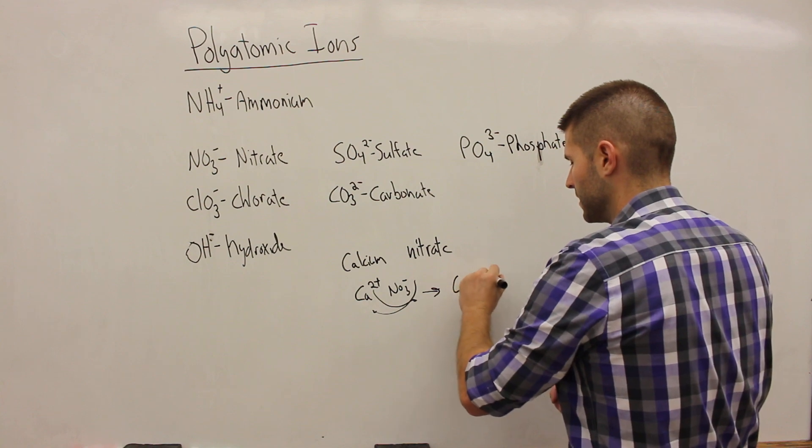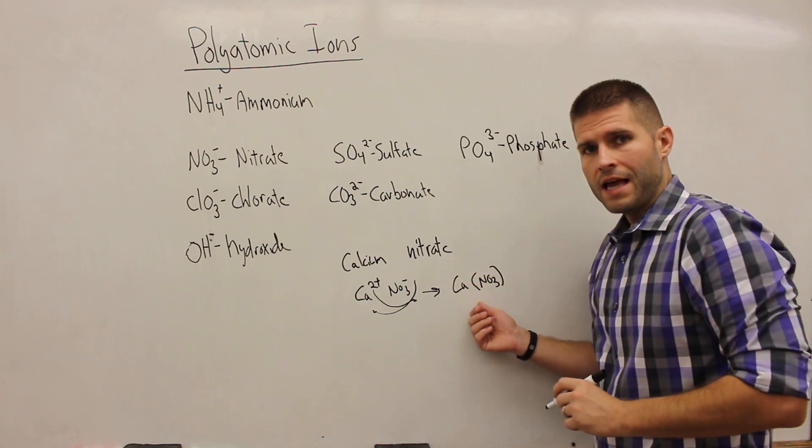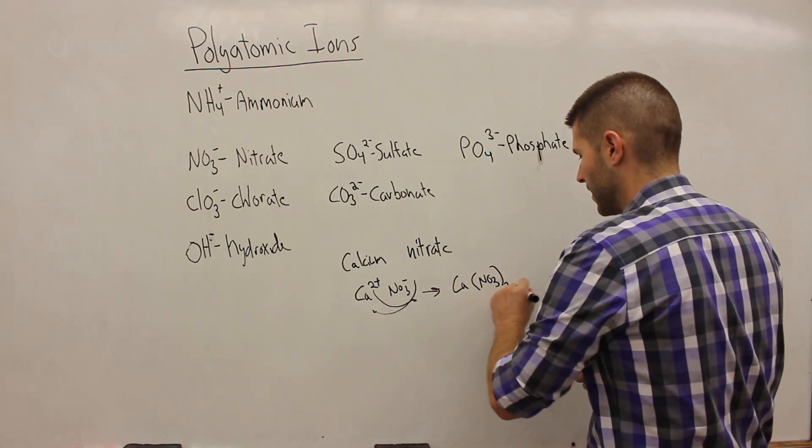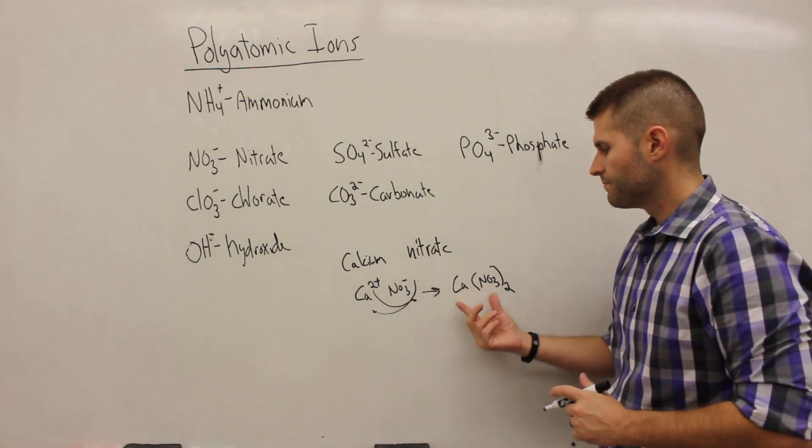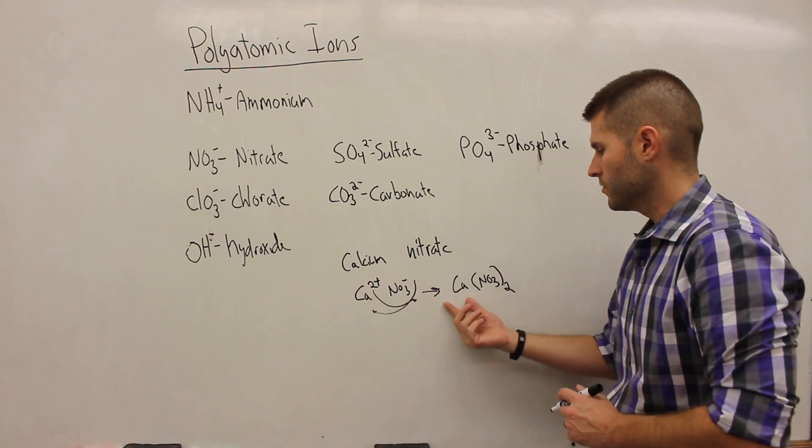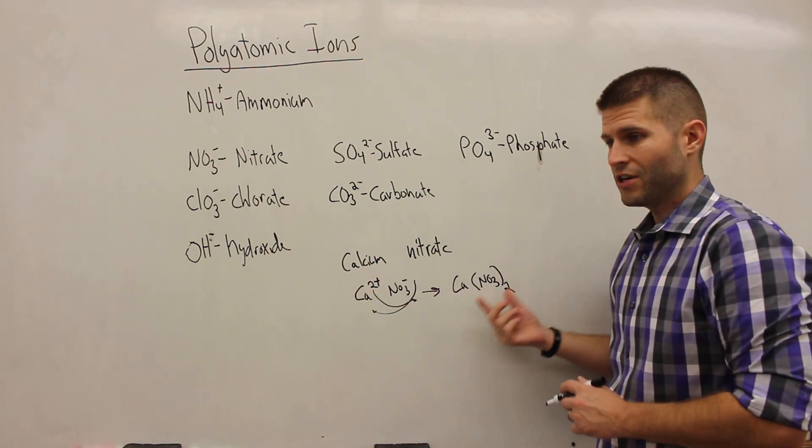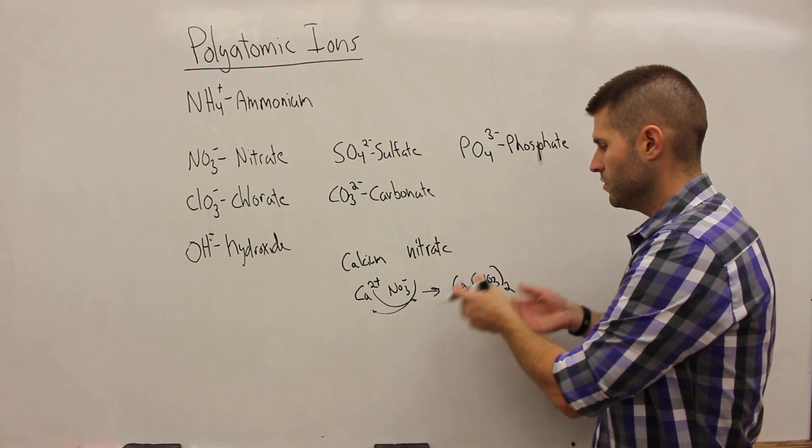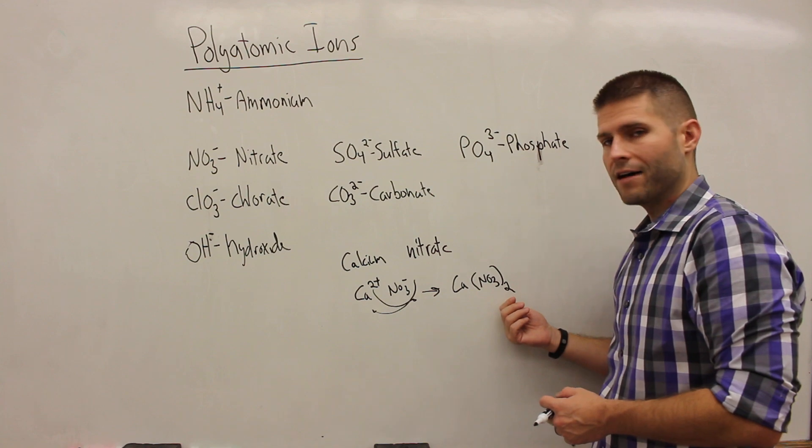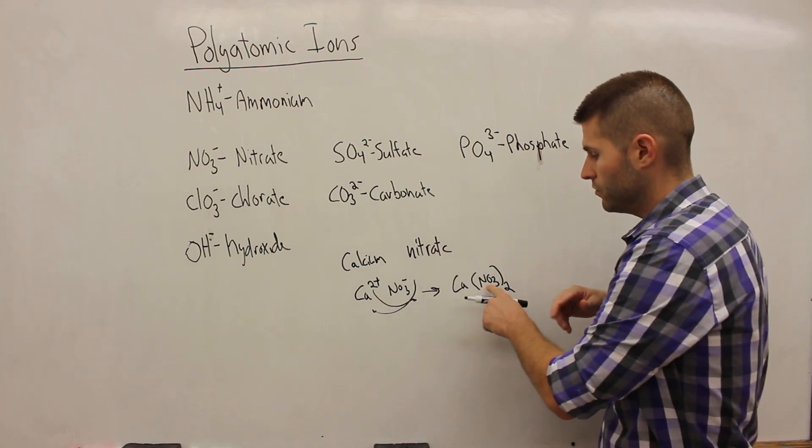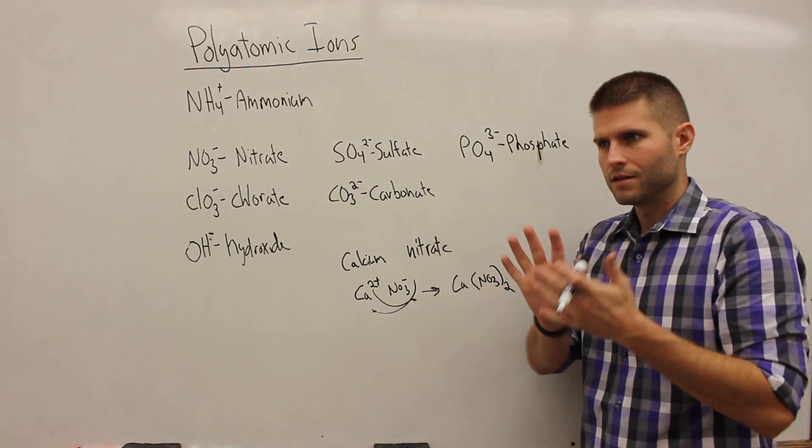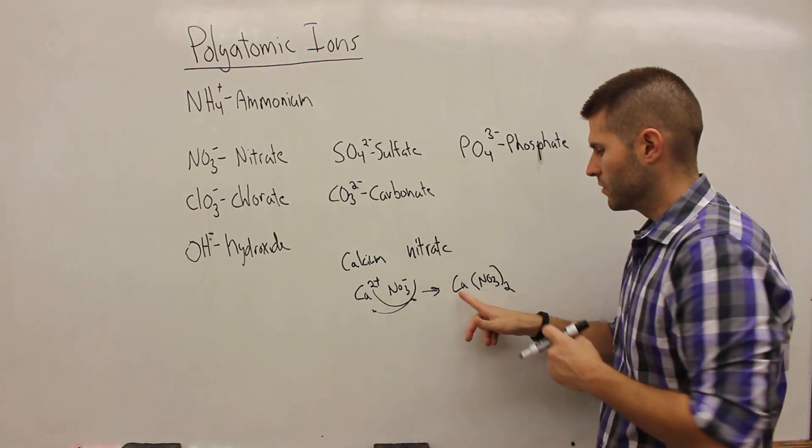So what we need to do is we need to somehow separate out this nitrate. And the way we do that is with parentheses. So we'll put parentheses around our polyatomic. And then on the outside of the parentheses, we will put the 2 to balance out the charges. So for calcium nitrate, we would have the single calcium because it has a plus 2, so it only requires one of those. It requires 2 nitrates because each one has a minus 1, so to balance out that positive 2, we need 2 of them. We would put the nitrate with parentheses around it and a 2 on the outside of those parentheses, indicating that there are actually two nitrate molecules attached to or interacting with this calcium 2+.